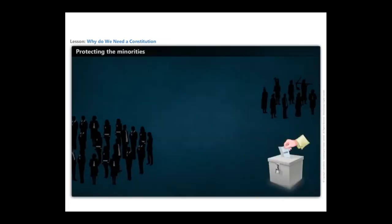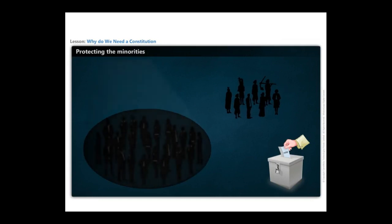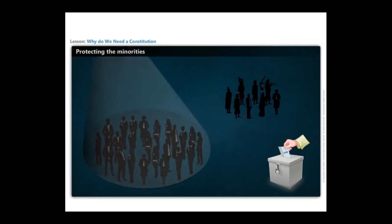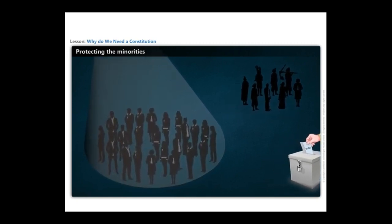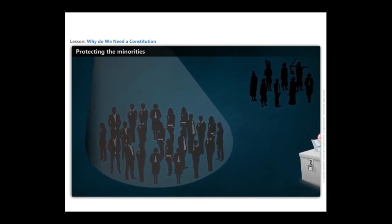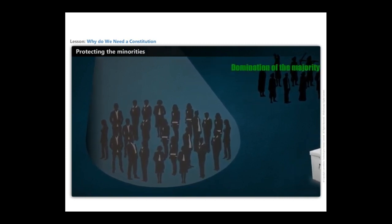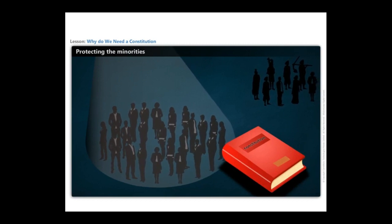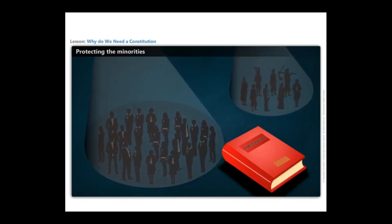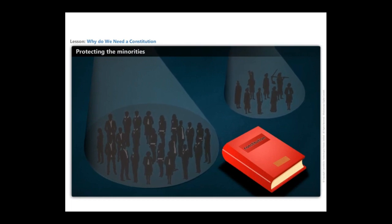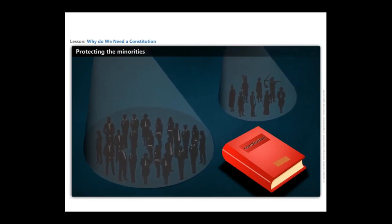Such unhealthy situations can occur in democratic societies too, where a majority can continuously enforce decisions that exclude minorities and go against their interests. Every society is prone to this tyranny or domination of the majority. Hence, the constitution usually contains rules that ensure that minorities are not excluded from anything that is routinely available to the majority.